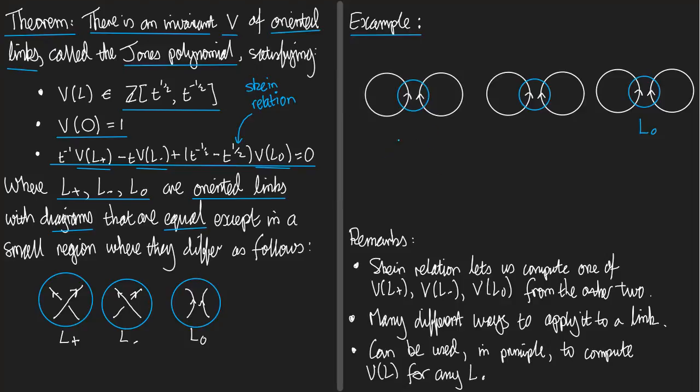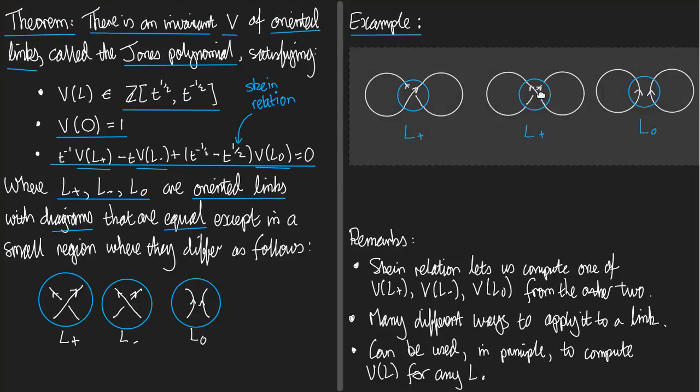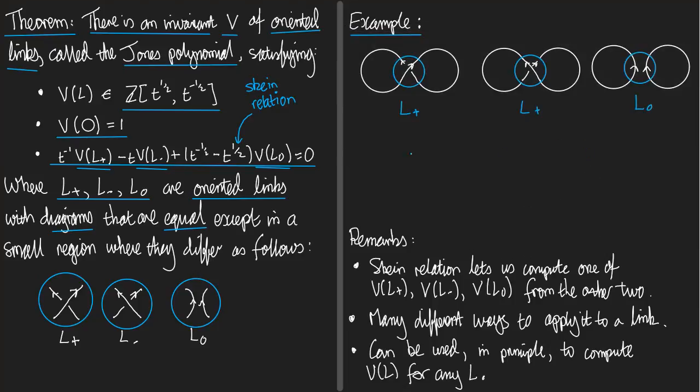Well, L plus should be what I get from this by replacing the not at all a crossing with a positive crossing. So, that's L plus. And L minus will be whatever I get by replacing the thing I circled with a negative crossing. So, that is L minus. Now, what are these links? Well, L zero is the thing we started with. So, I've got a set of three links that I can apply this skein relation to. The third one is L zero.